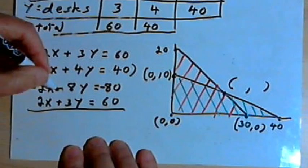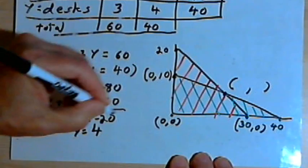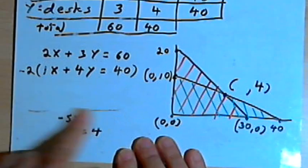I add the two equations together, and I get negative 5y equals negative 20. So if I divide both sides by negative 5, I get y equals 4, so that's one of the coordinates.